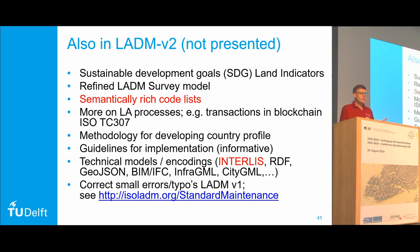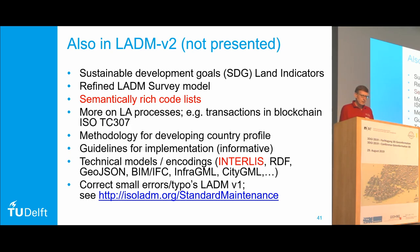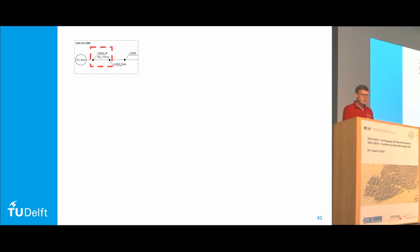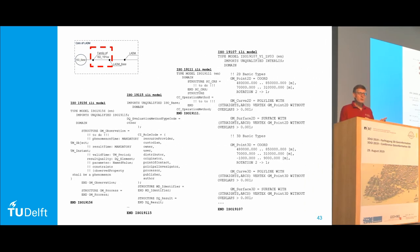LADM is a conceptual model. To implement it, you first have to develop a country profile for what is needed in a specific country or, in the case of Switzerland, in a canton. We want to also make guidelines for implementations. The next step is not a conceptual model but a technical model in various encodings — for example, Interlis or RDF, GeoJSON, and BIM IFC for different parts of the model. I highlighted Interlis because it's from Switzerland and is also going into the third dimension. There is one encoding of Interlis of LADM and the whole stack of ISO standards below.